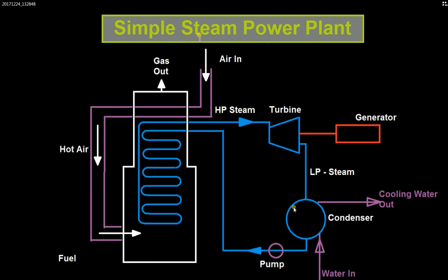Starting at one point in the cycle: you supply water in through the system, and a pump pushes that water in. Fuel is supplied to heat the water, and by heating the water you create high pressure steam. That high pressure steam is then supplied into the turbine, where the turbine blades are rotated using the pressure of the steam.